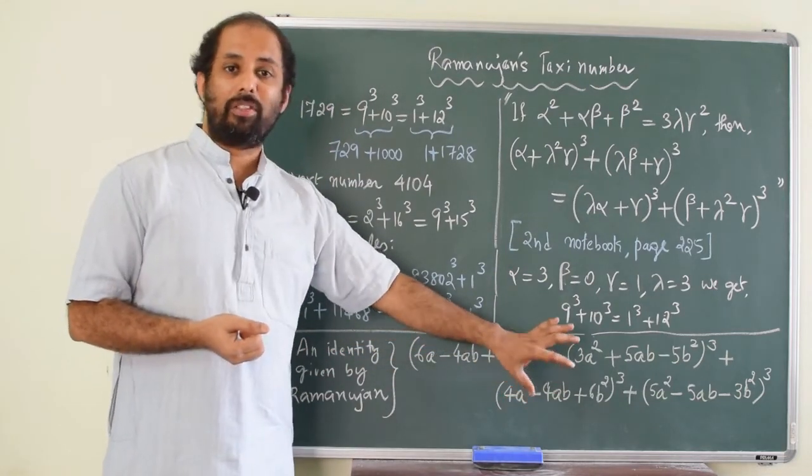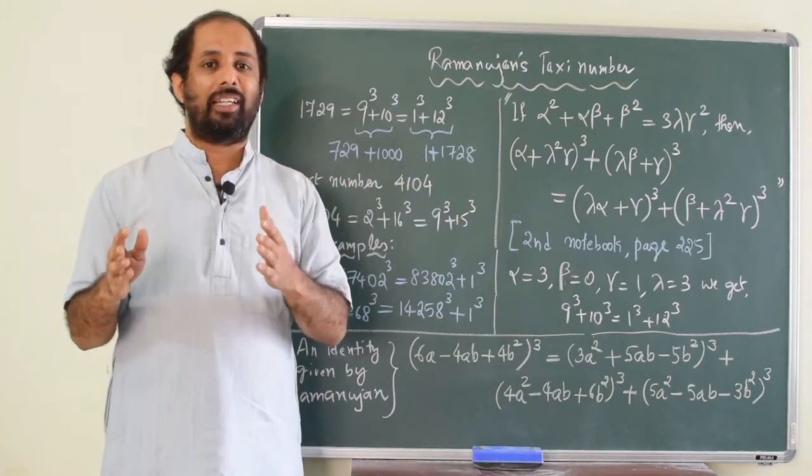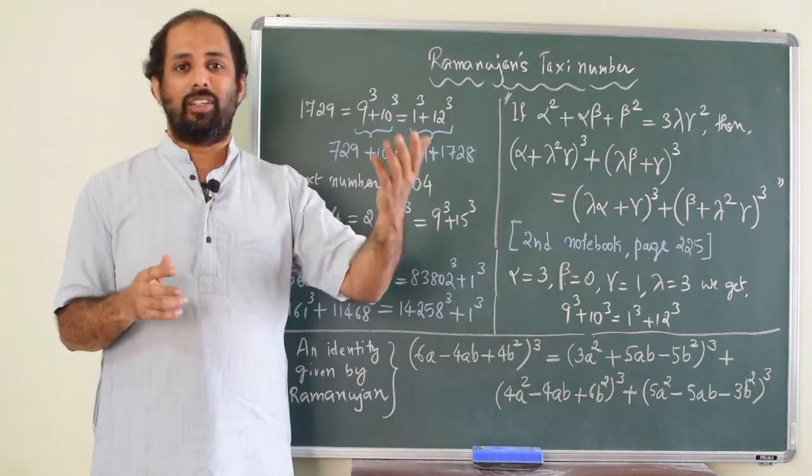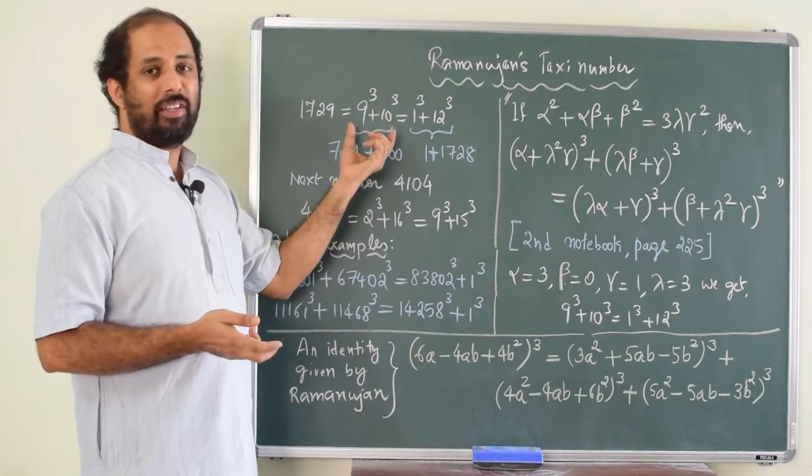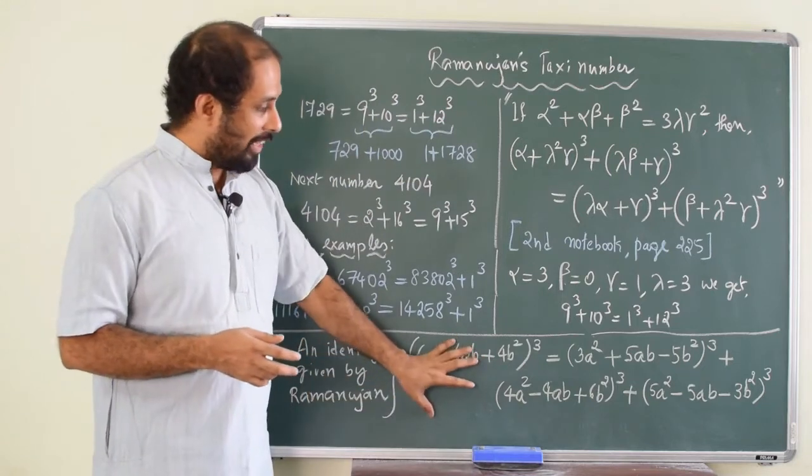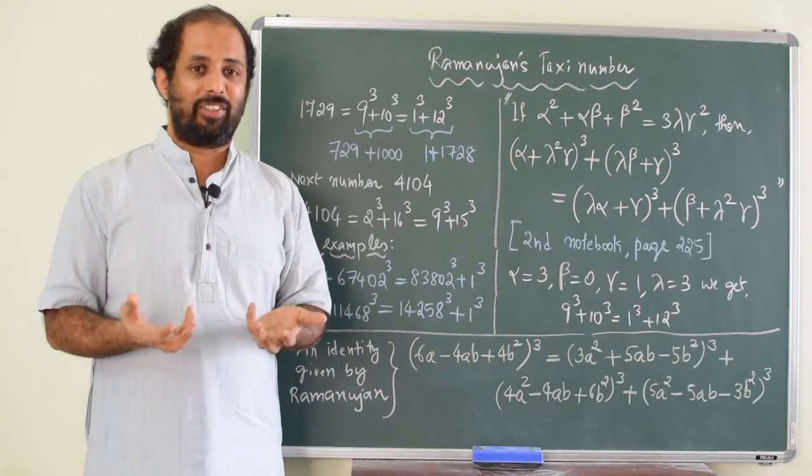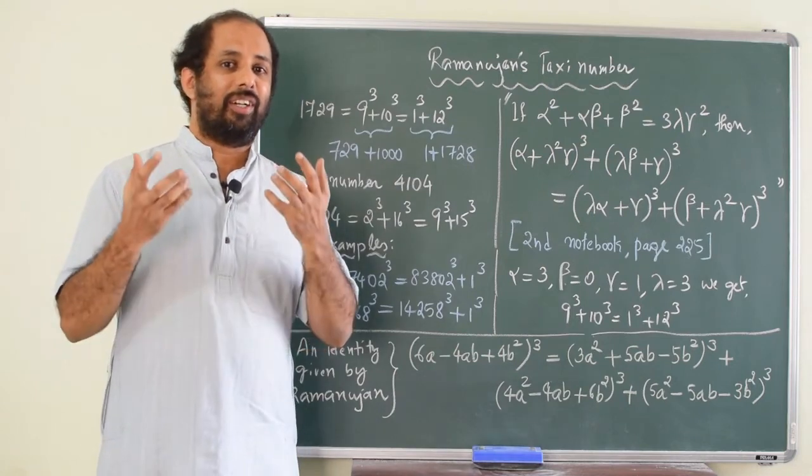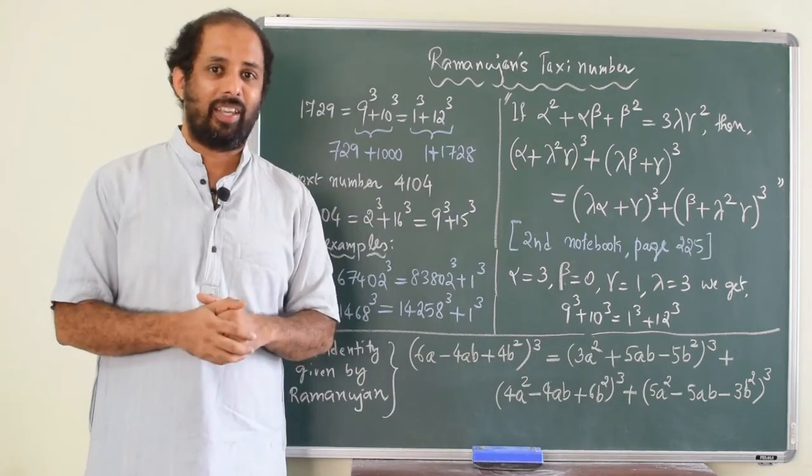Now, one of the cubes becomes negative, then that can be transferred to left hand side. And then, you will have something like X cube plus Y cube equal to Z cube plus W cube which is again in the form of 9 cube plus 10 cube equal to 1 cube plus 12 cube. So, this equation again gives hundreds of such equations where number can be written as sum of 2 cubes in two different ways.